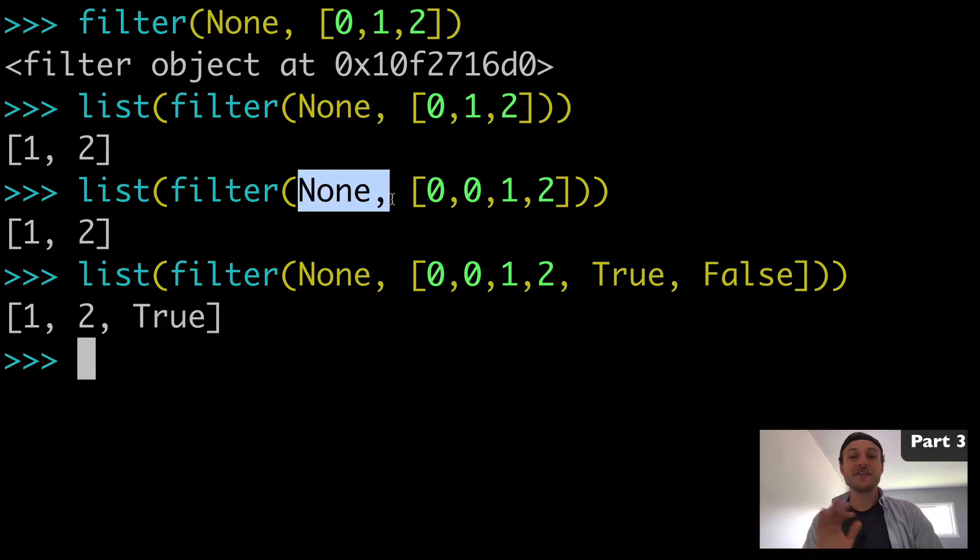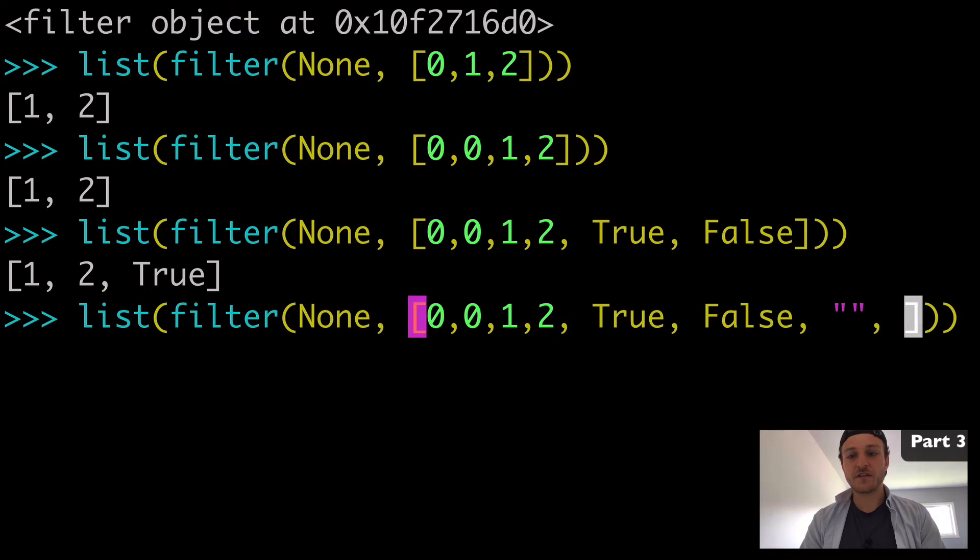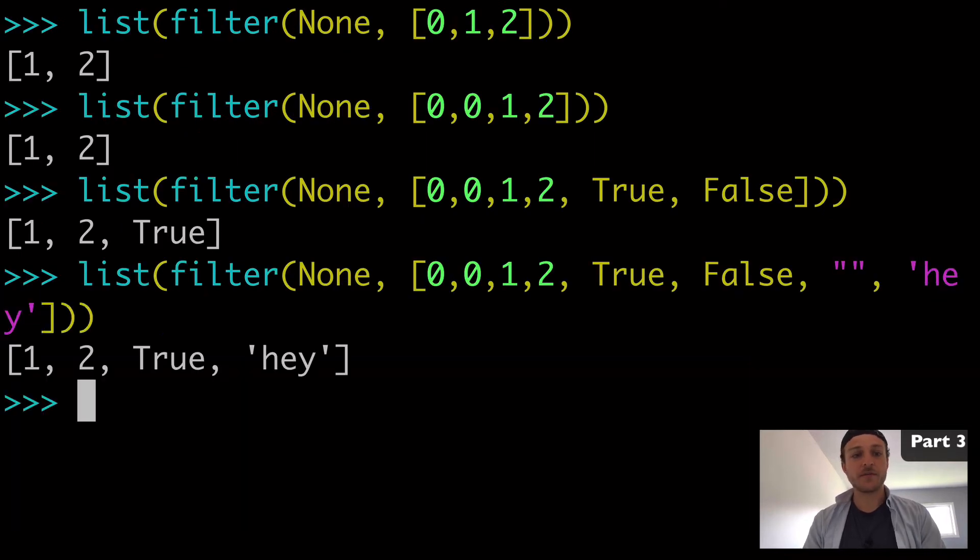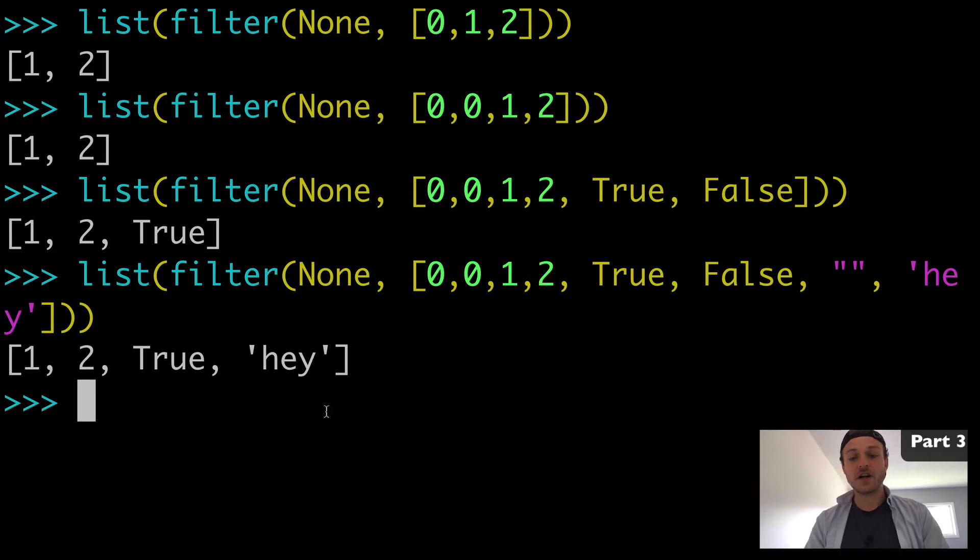So this none argument is filtering out all the falsy values, doesn't have to be an integer necessarily, anything falsy. Actually let's try an empty string versus a string with something in it. And yeah, so the empty string doesn't get passed and the string with values in it, the truthy string gets passed. So there's a cool trick with none because if you had to do that with a list comprehension, it wouldn't look pretty.